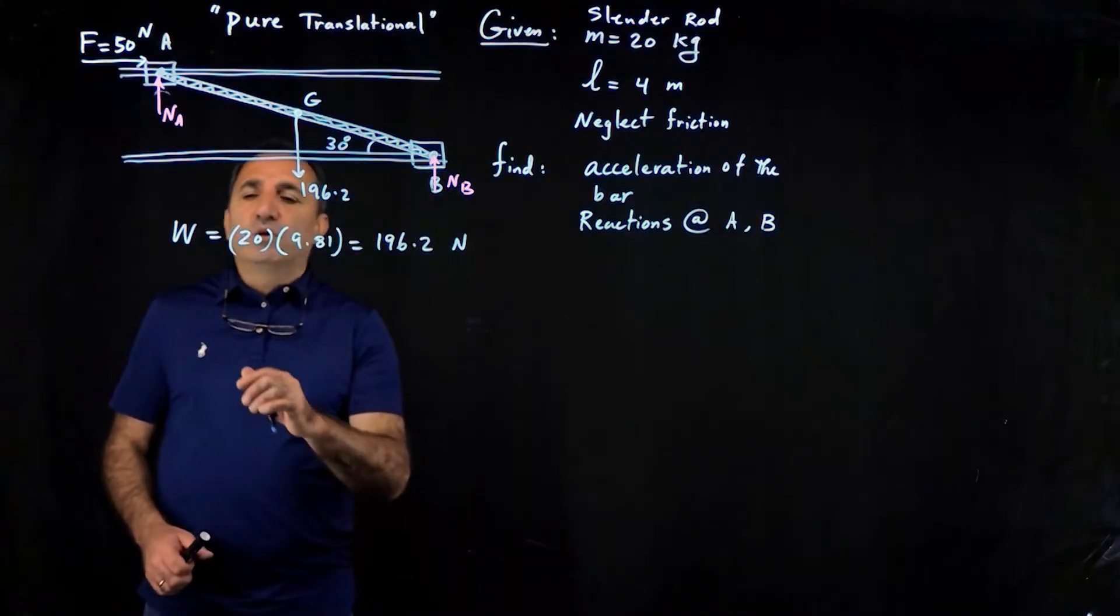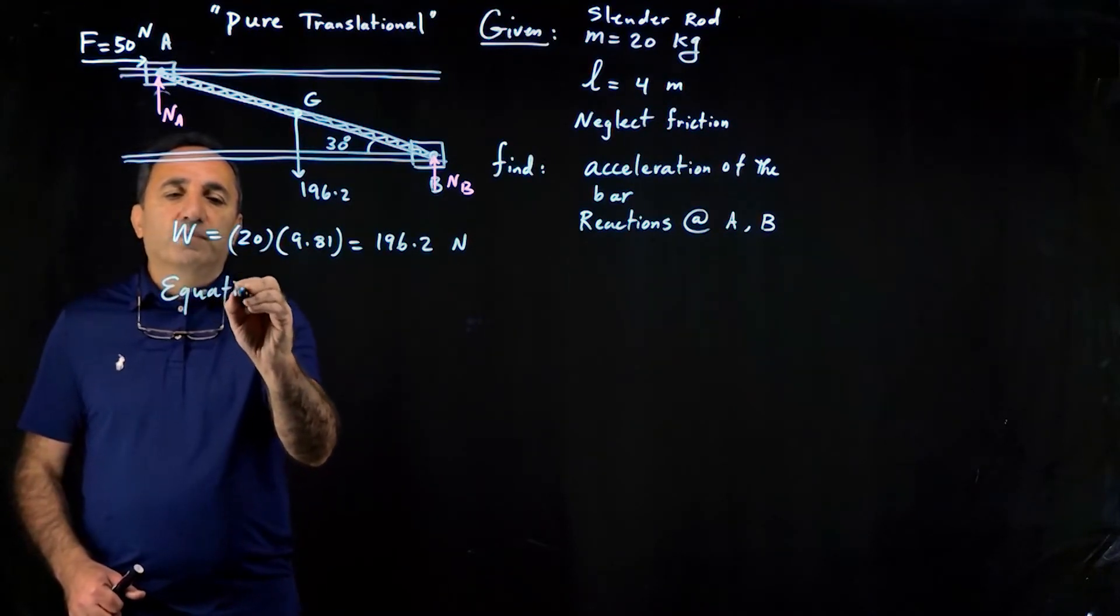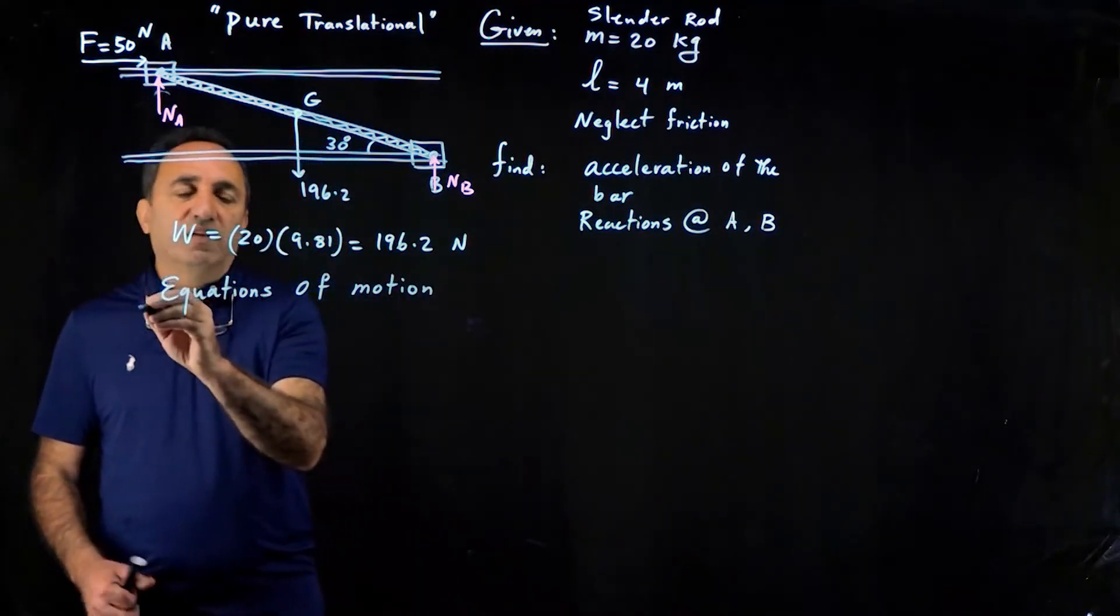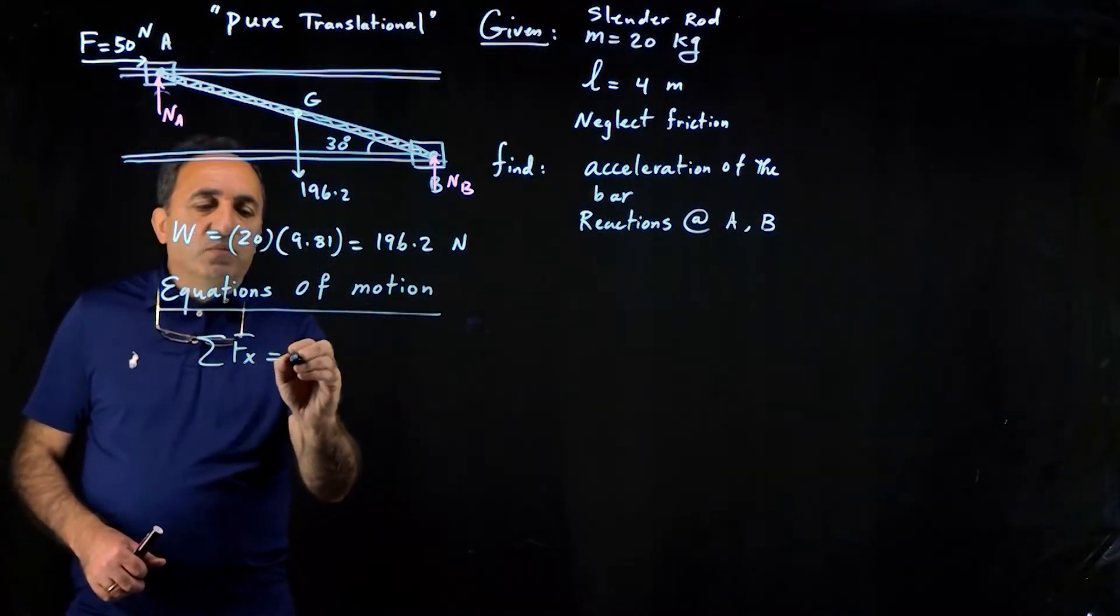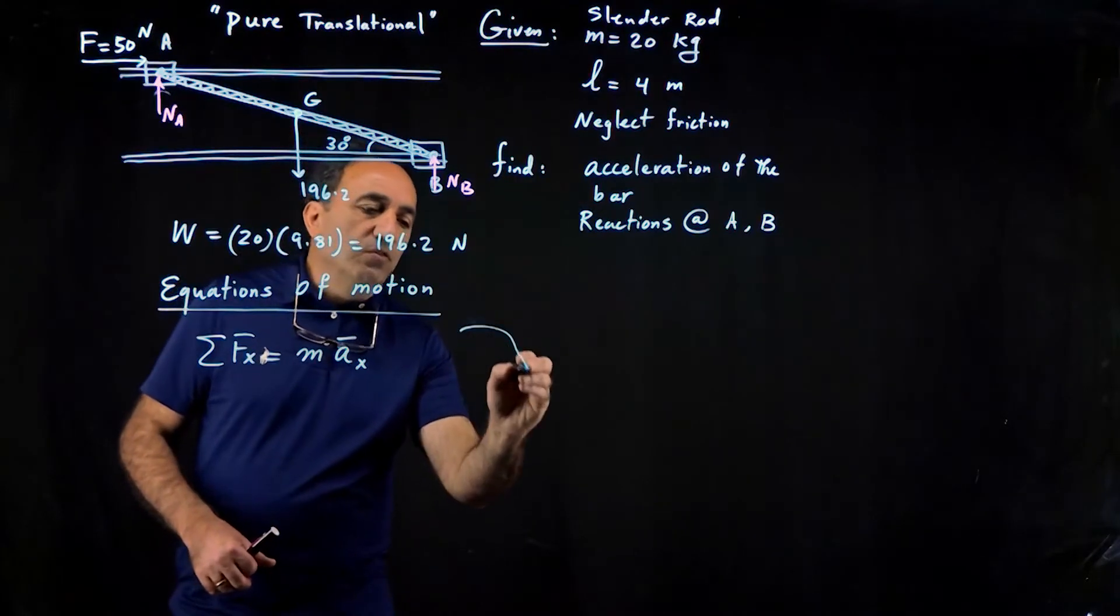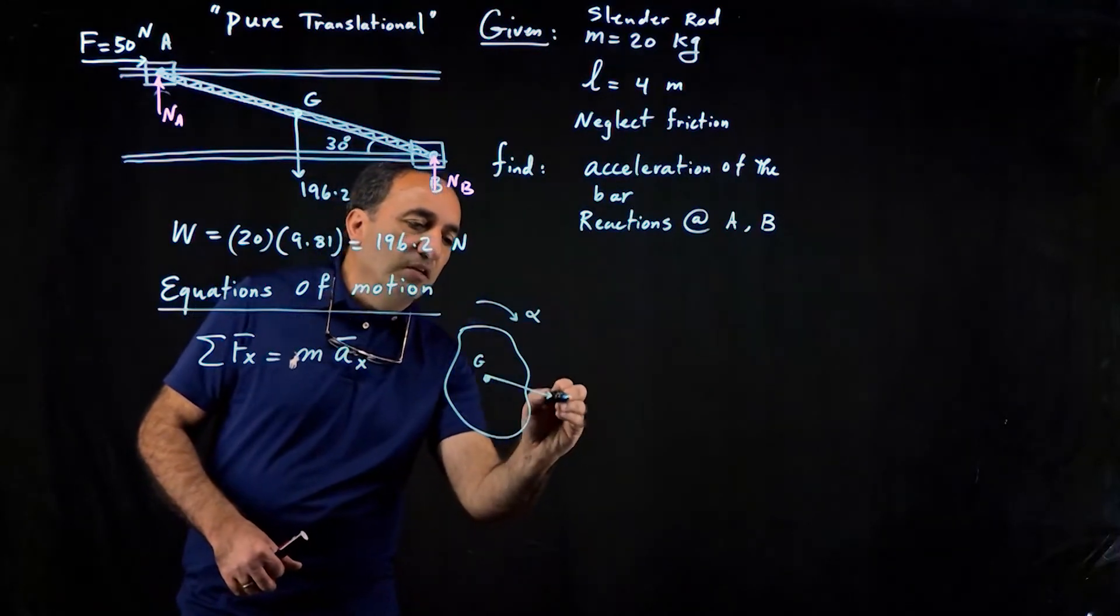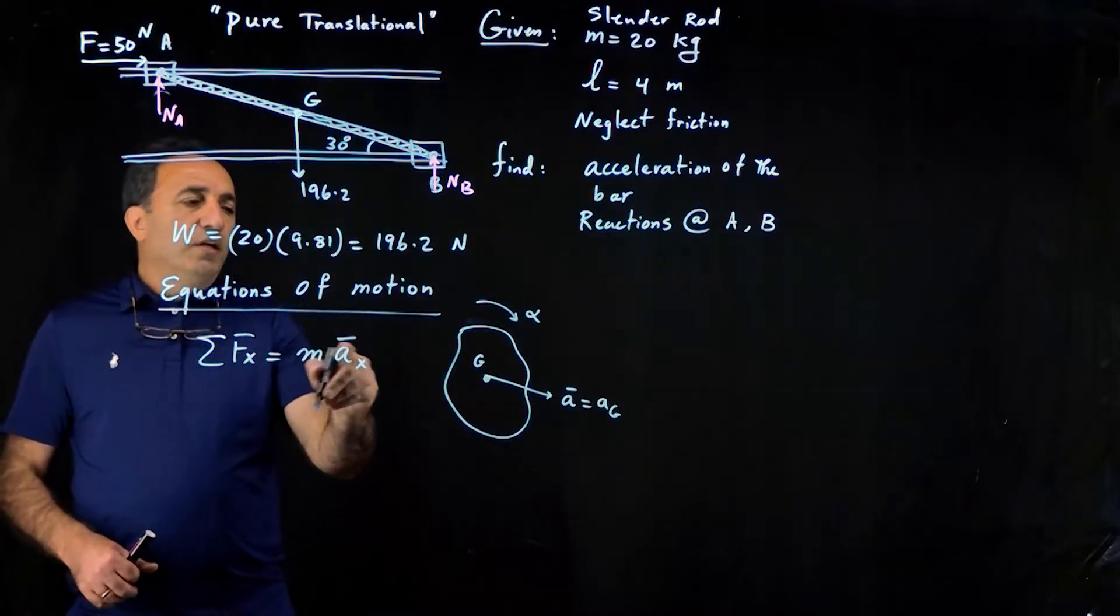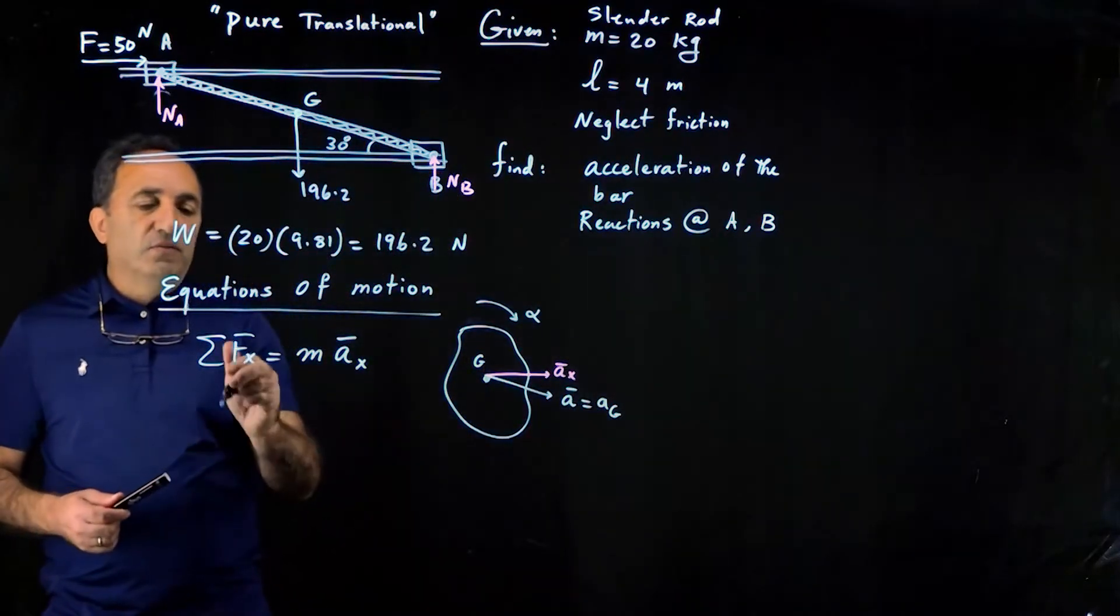So we know that for rigid body motion, the equations of motion are as follows. For any rigid body rotating and translating at the same time, the general equations are sum of the forces in x must be equal to mass times acceleration in the x, acceleration of the center of mass. In general, if you have a rigid body that is rotating and its center of mass has some acceleration, which we call it a-bar. A-bar is actually a-sub-g.